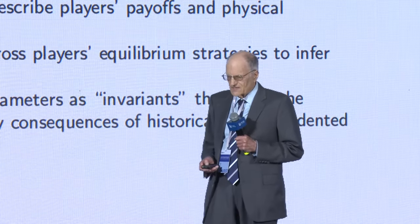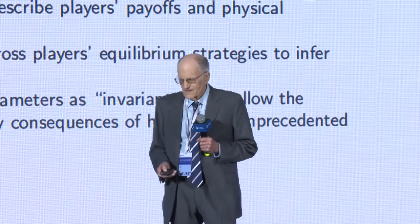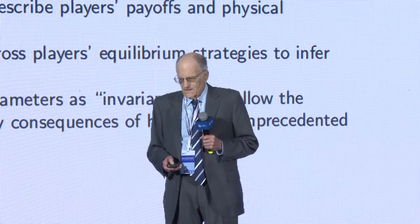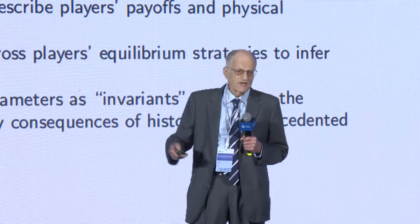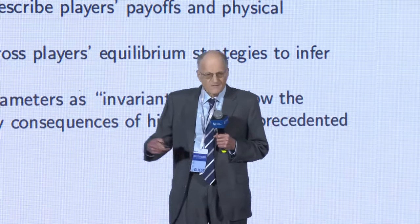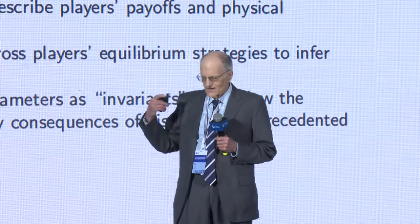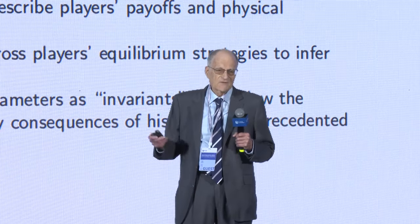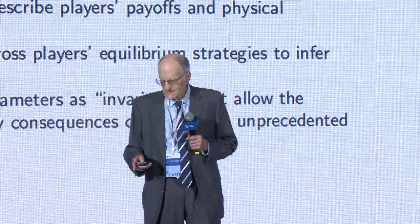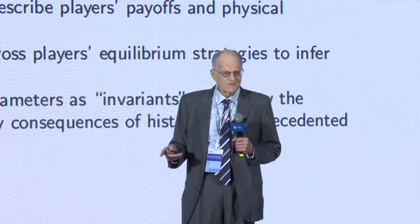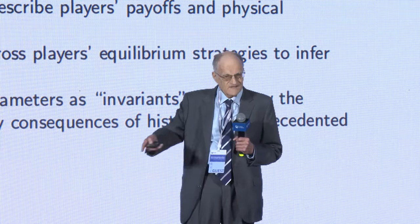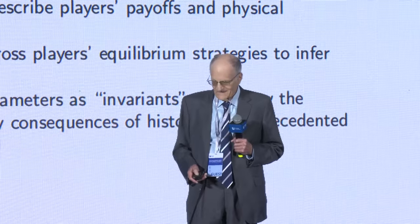What's an economic prior? You posit a dynamic game with a small number of invariant parameters — those parameters describe players' payoffs and physical constraints. Then the hope is, observing one fraction of a play of this game, you try to infer their equilibrium strategies, and from their equilibrium strategies and your knowledge of the structure of the game, you try to infer back those parameters. These are the cross-equation restrictions of rational expectations econometrics. You interpret those parameters as invariants that allow economists to study consequences of historically unprecedented economic policies. Alibaba and Amazon do that every day when they do dynamic pricing.